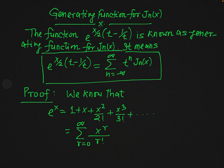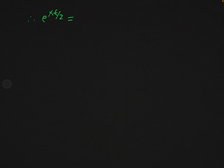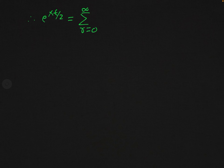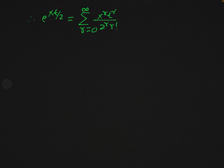In the light of this definition of e^x, we can define e raised to the power x over 2 times t. Here, at the place of x there is xt over 2. So from the definition of e^x, we may write it as summation r equals 0 to infinity of x to the power r, t to the power r, over 2 to the power r and r factorial. Let us call this equation 1.